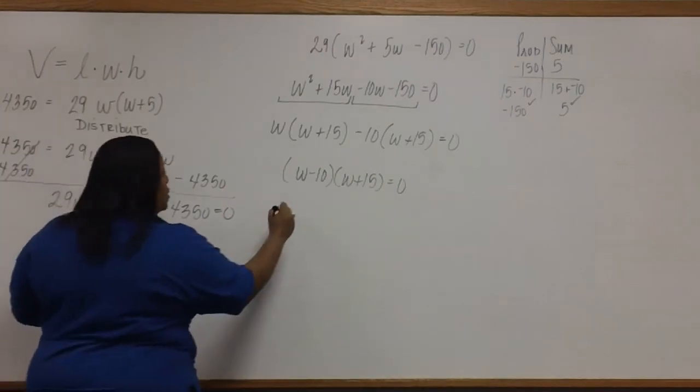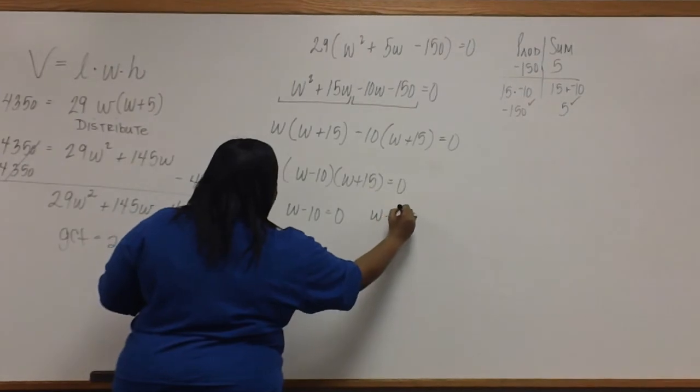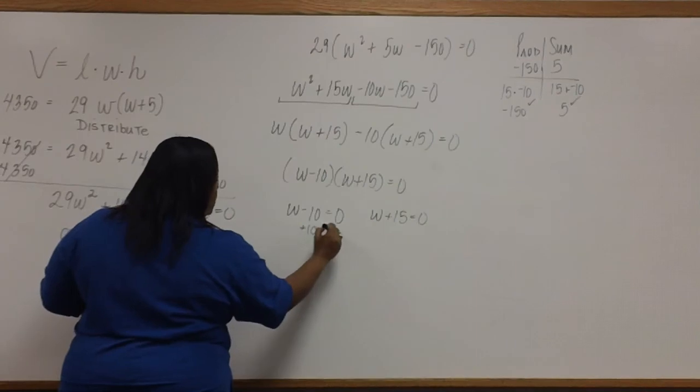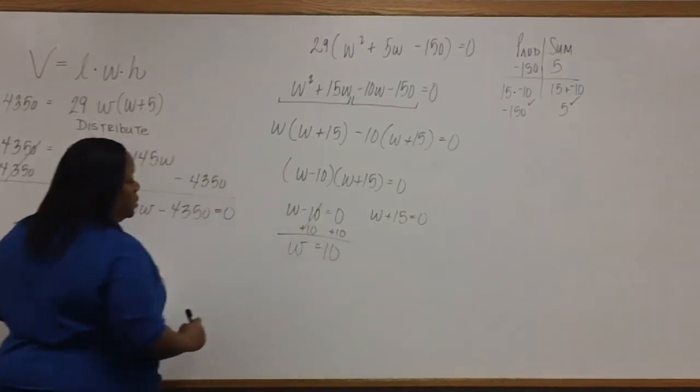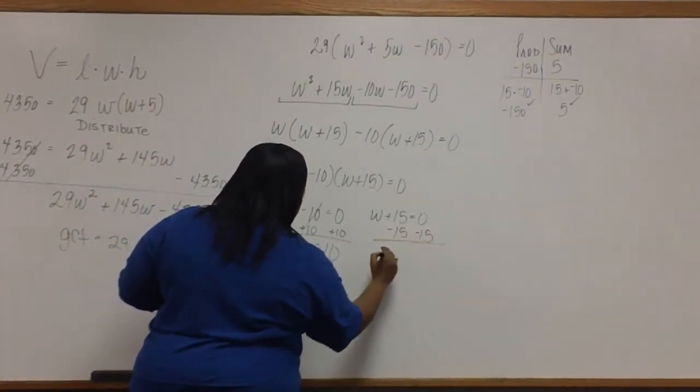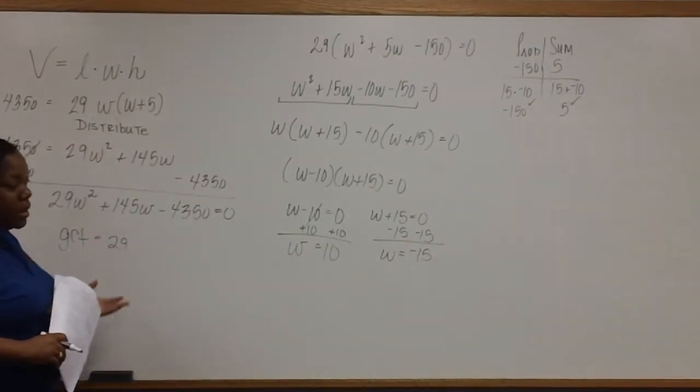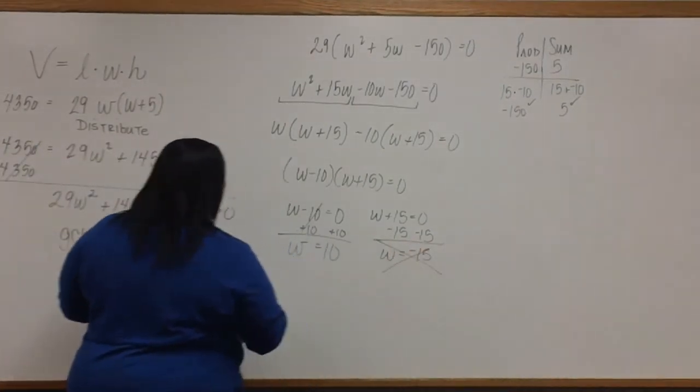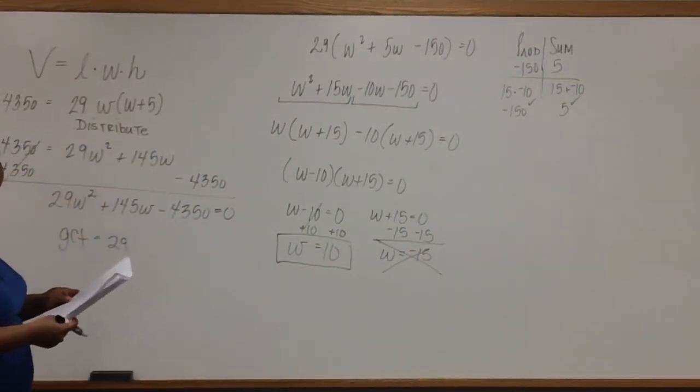The two equations are W minus 10 equals zero and W plus 15 equals zero. Adding 10 to both sides, we find that W equals 10. And subtracting 15 from both sides in this equation, we find that W is equal to negative 15. But remember that W represents the width which is a measurement. And measurement can't be negative. Which means that the width of this aquarium is 10 inches.